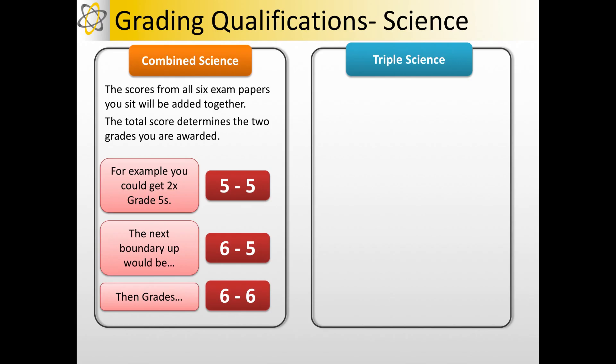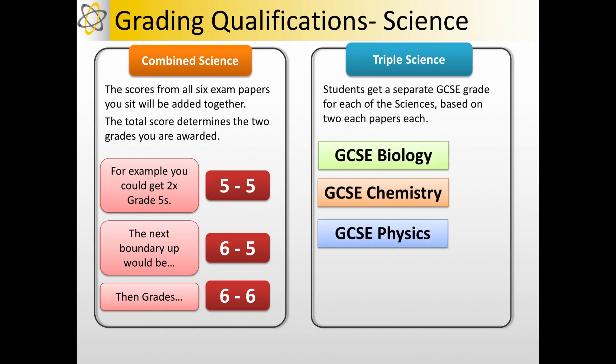The two grades are linked together though from all six of the exam papers. If you're doing triple, you get a separate GCSE grade based on the two papers that you sit in each of the sciences. So you could get a Grade 6 in Biology, a 7 in Chemistry and a 5 in Physics. They're not linked at all those three grades.